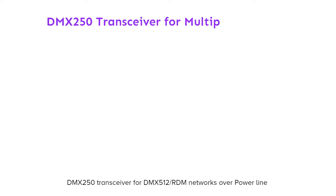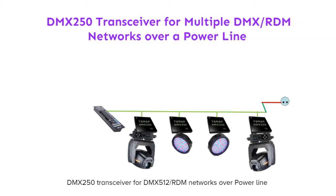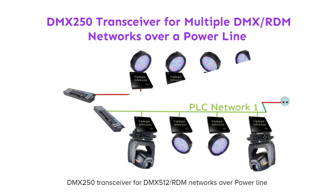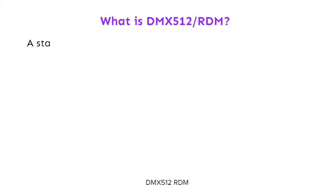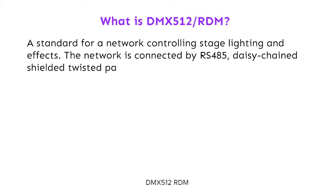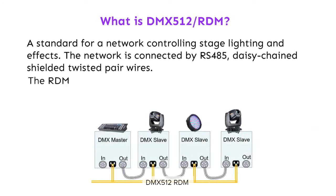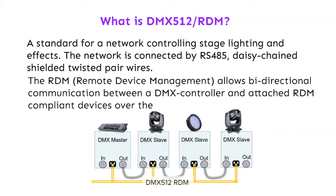This video describes the DMX-250 transceiver for multiple DMX-RDM networks over a power line and trains how to operate it. The DMX-512 RDM protocol is a standard for a network controlling stage lighting and effects. The network is connected by RS-485 daisy-chain shielded twisted pair wires. The RDM allows bi-directional communication between a DMX controller and attached RDM-compliant devices over the DMX line.